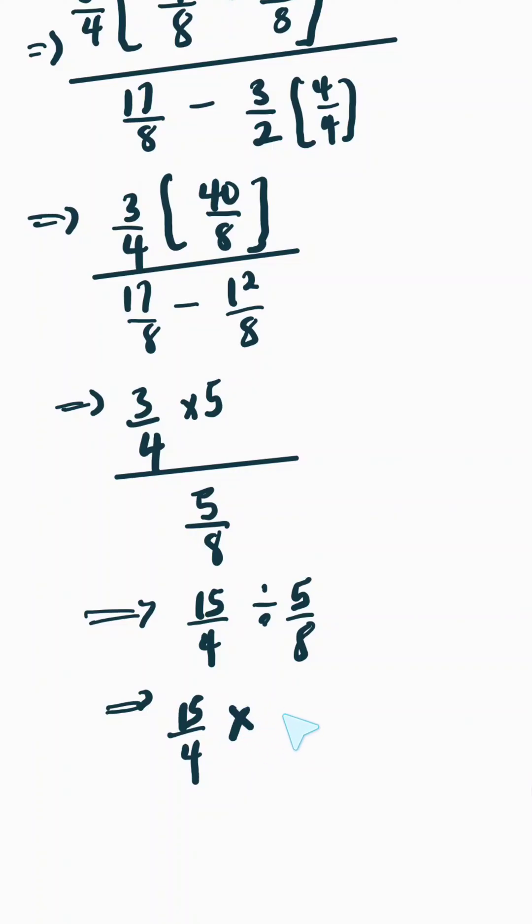Which is going to be 8 over 5. Now 5 over 5 cancels to 1, 4 over 8 we have 2. So for the numerator we have 3 times 2 which gives 6.